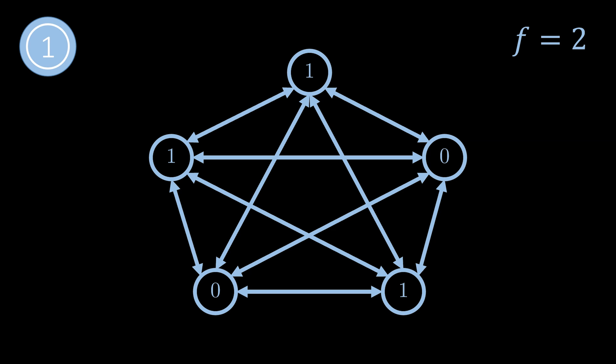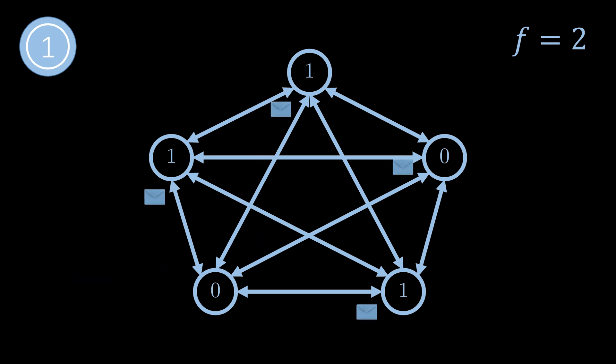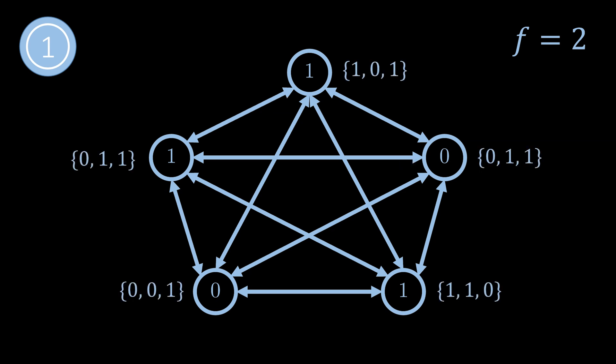The algorithm proceeds in rounds, each round consisting of two message exchanges among all nodes. For every node, the first step in every round is to tell all nodes its current value. For example the node in the bottom left sends val(0,1), meaning its value is zero in round one. Every node waits until it receives the value of more than half of all nodes. Since fewer than half may crash, every node will always be able to collect enough values — three values in this example since at most two out of five nodes may fail. Each node checks if it receives only zeros or only ones.